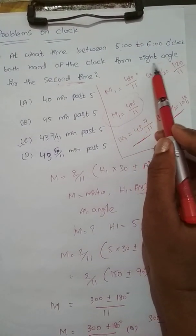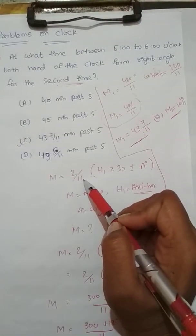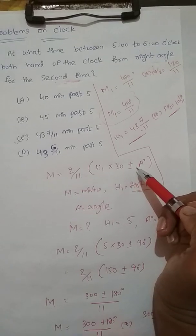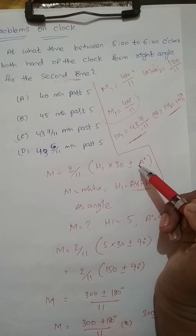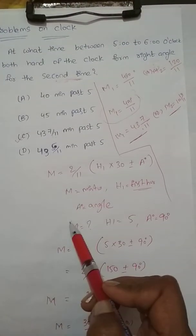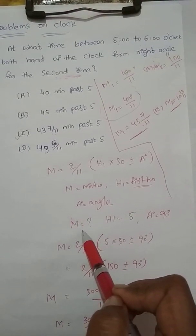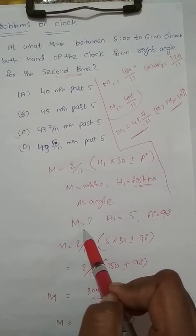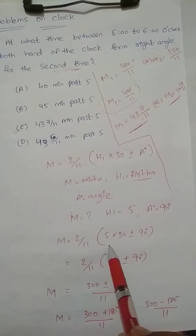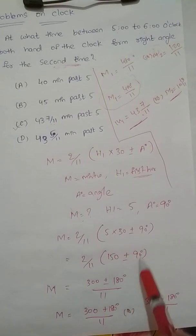So the right angle is 90 degrees, and the formula is M = 2/11 × H1 × 30 ± A degrees, where M equals minutes, H1 is the hour, and A is the angle. The right angle answer is confirmed: M = 2/11 × 5 × 30 ± 90 degrees.